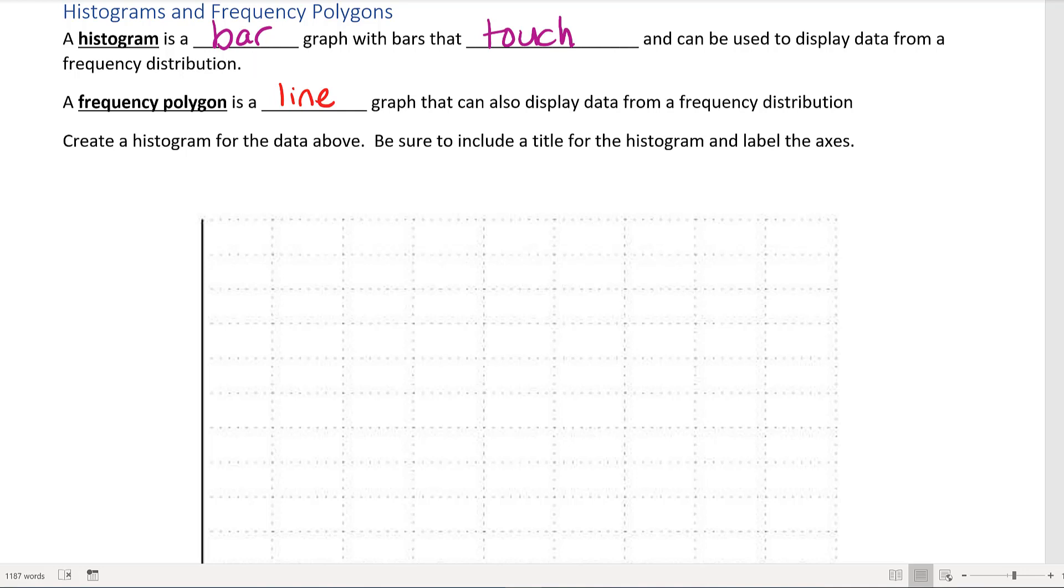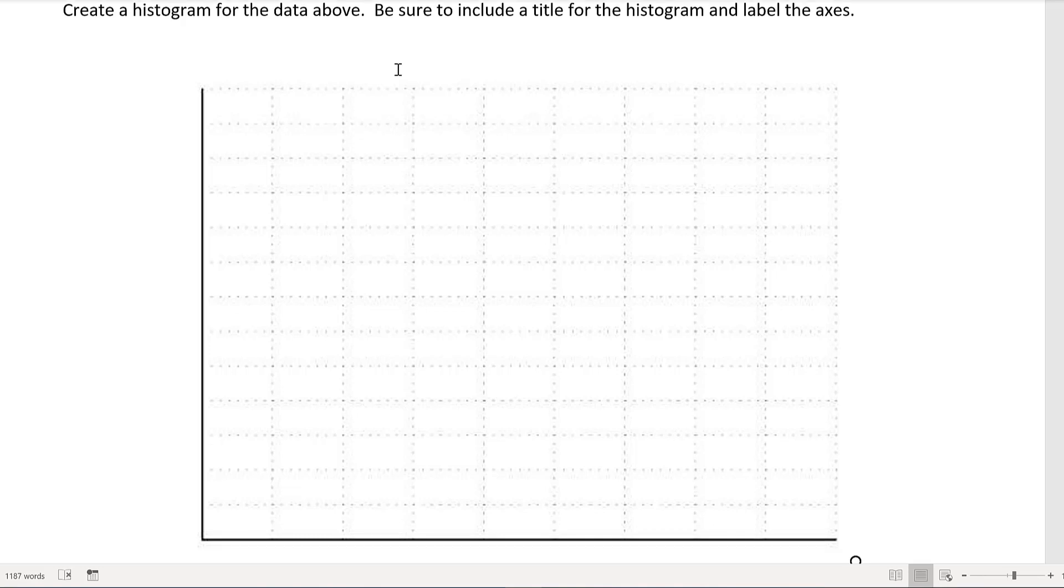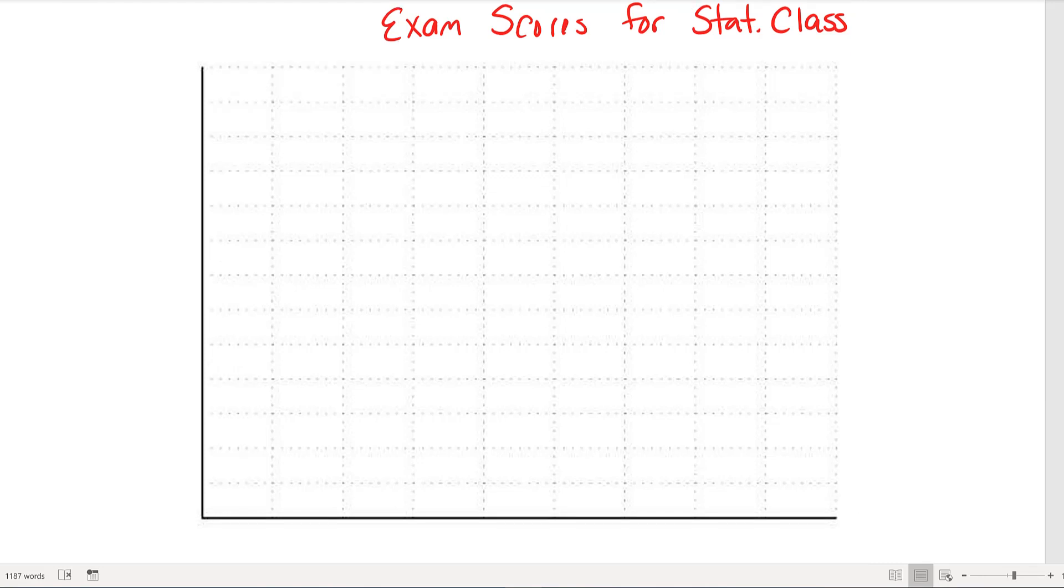So we're going to create a histogram for the data above. Be sure to include a title for the histogram and label the axes. So here's my histogram. The first thing we want to do is label a title, so we'll say Exam Scores, and I believe this was for a statistics class. We have to label our axes as well, so this bottom axis I'm going to be calling the grades.